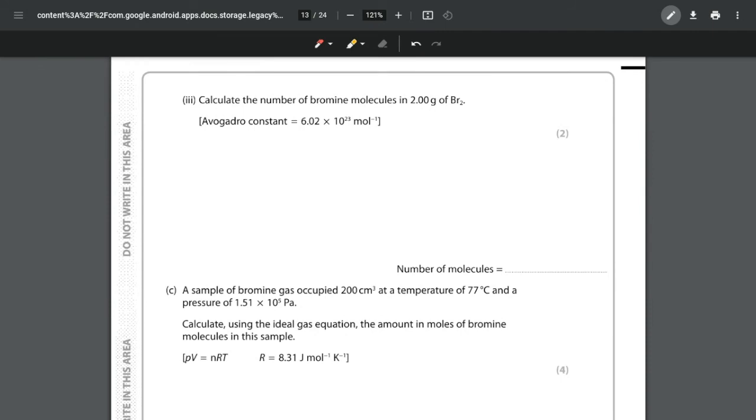For part 3, we are looking at Avogadro's constant and we want to know how many bromine molecules there are in 2 grams of bromine. The first thing we have to do before we can use Avogadro is we always have to put a mass into moles. For any calculation, if you don't know where to start, always calculate the number of moles of something.